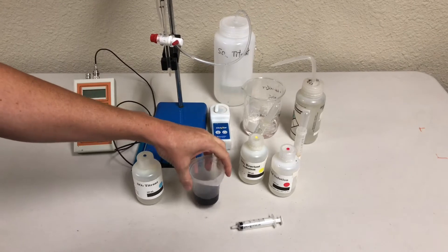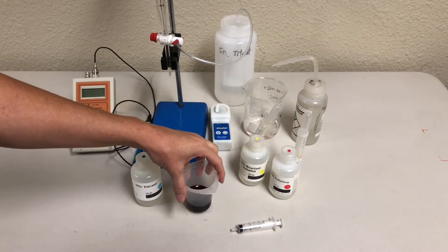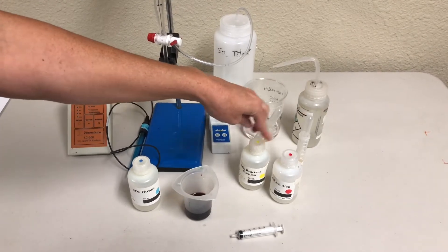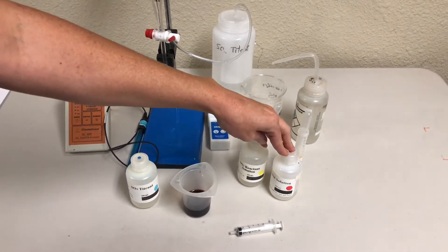After collecting a 25 mil wine sample we are now ready to run the test. You will need to add 2 mils of your SO2 reactant and 2 mils of your SO2 acid solution.